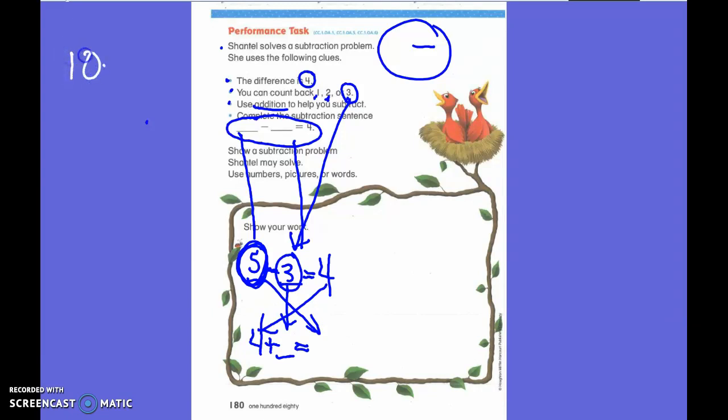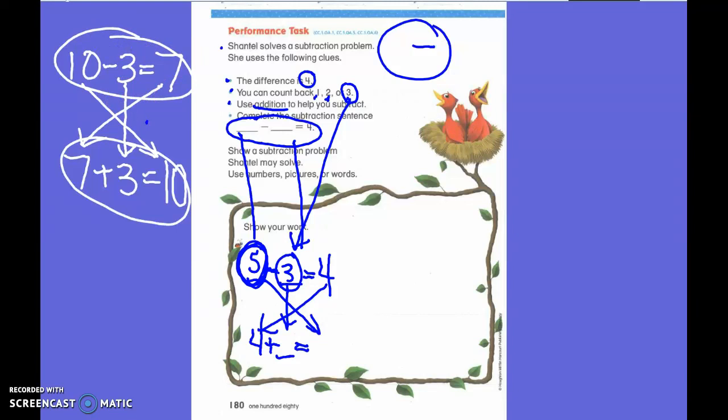Let's do ten minus three equals seven. So if I'm going to switch it around to make an addition sentence, I'm going to put this seven plus, where'd you get three? From the subtraction sentence. Do I have to have that number? Yes. Equals? Ten. Where did you get ten? From the subtraction sentence. See, I have my seven. I have my three. And I have my ten. Is this the family member to this one? Yes, it is. Do these have to be family members? Yes, they do.